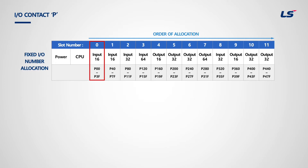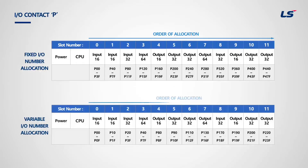For slot number 0 with fixed input-output number allocation, when an input-output module with 16 points is equipped, it will use P0 to PF. The remaining input-output devices from P10 to P3F can be used as internal memory. For variable input-output number allocation, input-output numbers are allocated based on actual modules equipped in PLC: one word for 16-point module, two words for 32-point, and four words for 64-point. If a user changes a module from 64 points to 32 points, the input-output numbers from that slot will be pushed back.